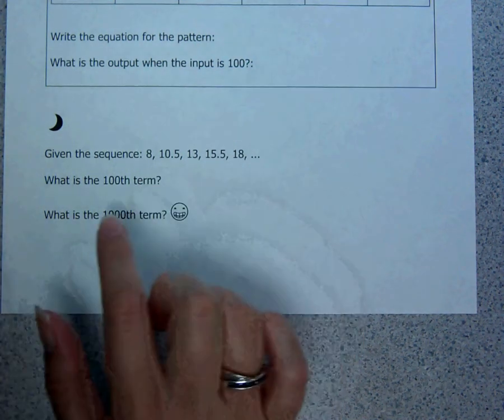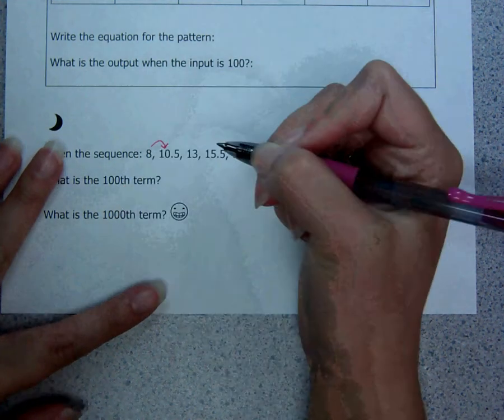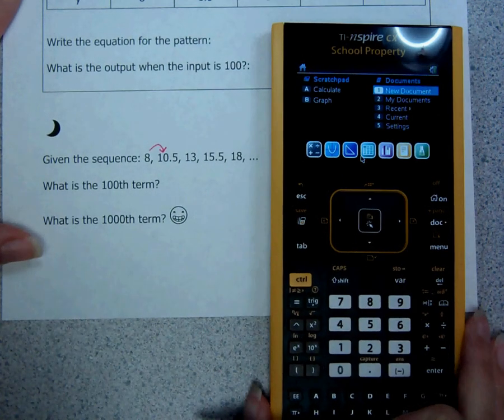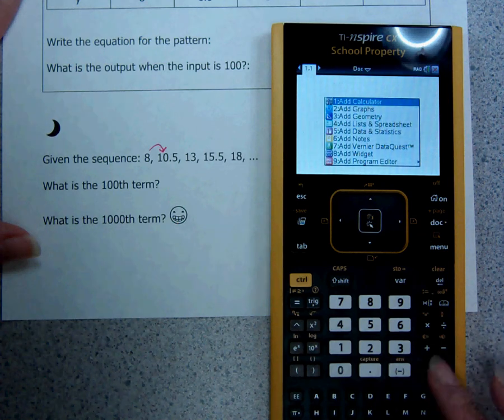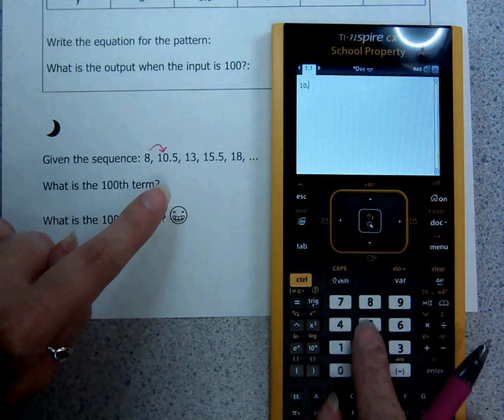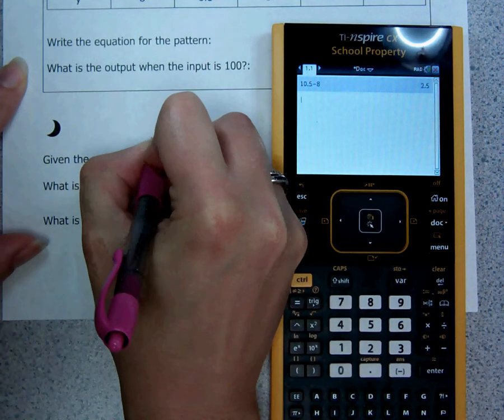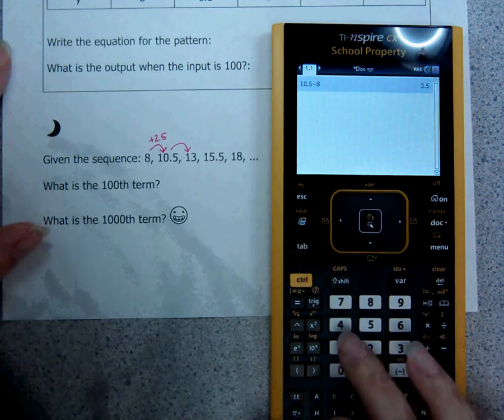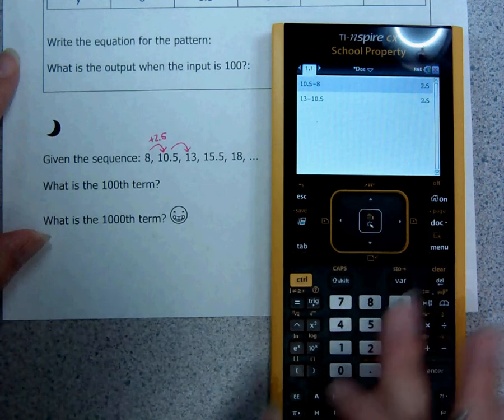So, I need to figure out how do I go from 8 to 10.5. If you want to do it in your head, you can. If you want to do it in your calculator, you can. I'm going to do it in my calculator. Okay, so I'm going to subtract going backwards. So, 10.5 minus 8 gives me 2.5. So, I add 2.5. How about from 10.5 to 13? So, 13 minus 10.5. Add 2.5.